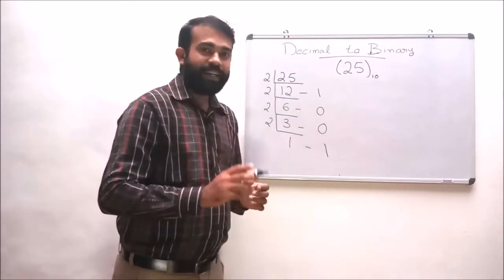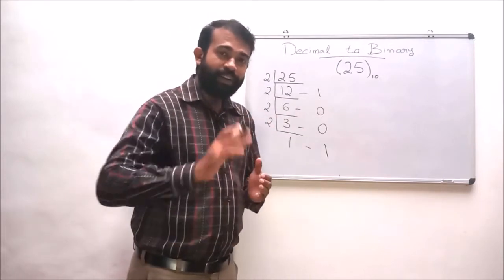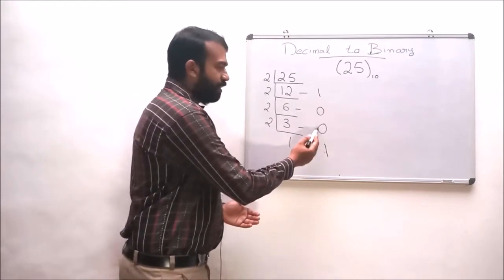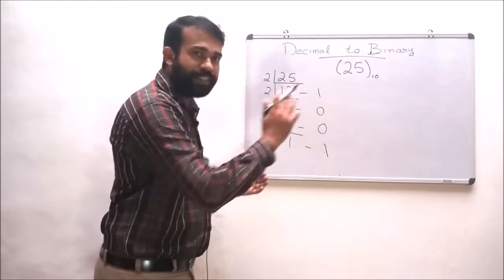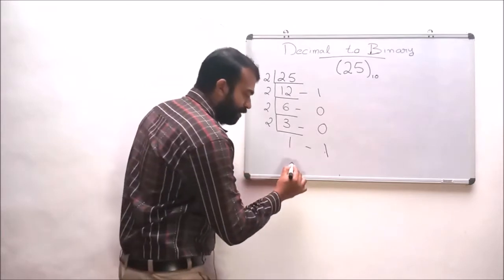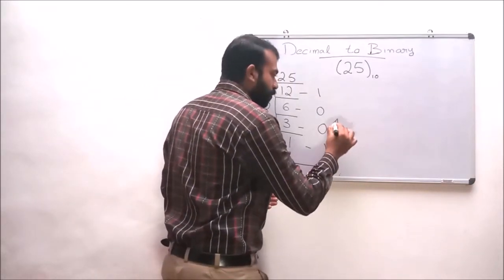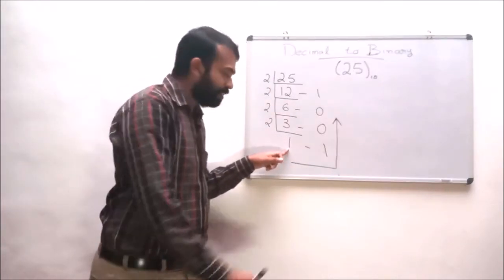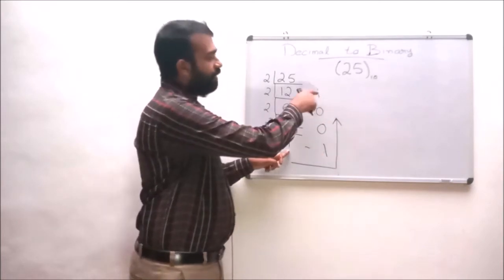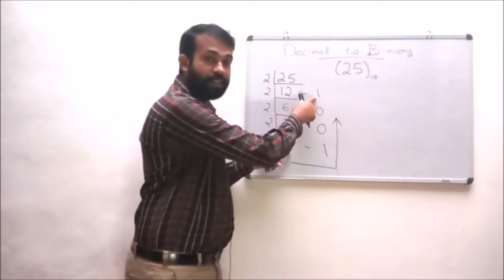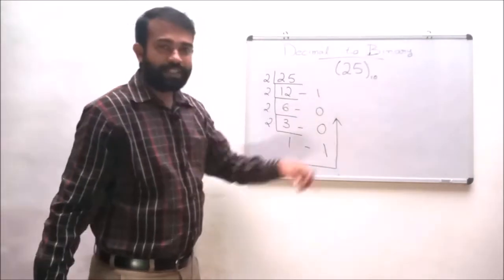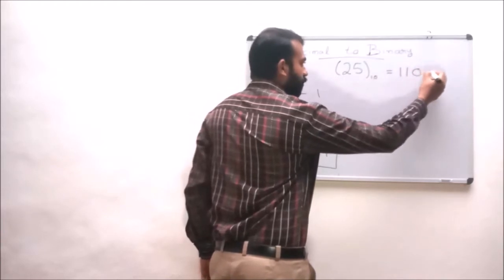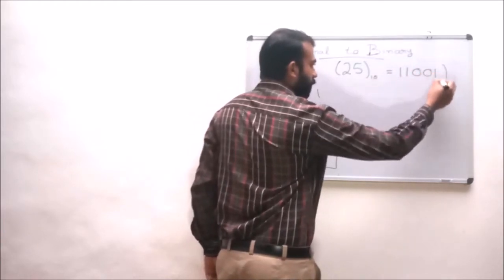The decimal number 25 can be converted to binary as 1, 1, 0, 0, 1. The order of reading the binary is from the last quotient to the first remainder. The most significant bit is the last quotient and the least significant bit is the first remainder. So the equivalent is written as 11001 to base 2.